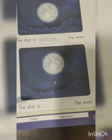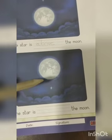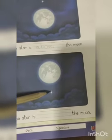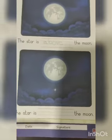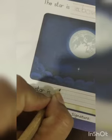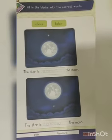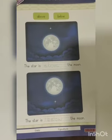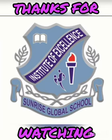Now in the next blank, it is written: the star is ___ the moon. In this picture the star is below the moon, so in this blank we will write 'below'. From these two worksheets you would have understood the concept of above and below. Thank you.